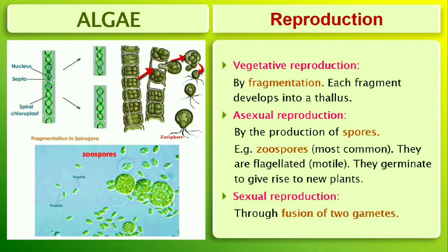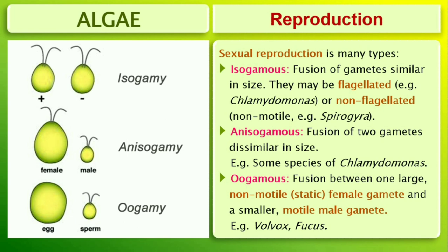Sexual reproduction takes place through fusion of two gametes. These gametes can be flagellated and similar in size, as in Chlamydomonas, or non-flagellated, non-motile but similar in size, as in Spirogyra — such reproduction is called isogamous. Fusion of two gametes dissimilar in size, as in some species of Chlamydomonas, is termed anisogamous. Fusion between one large, non-motile female gamete and a smaller motile male gamete is termed oogamous — for example, Volvox and Fucus.